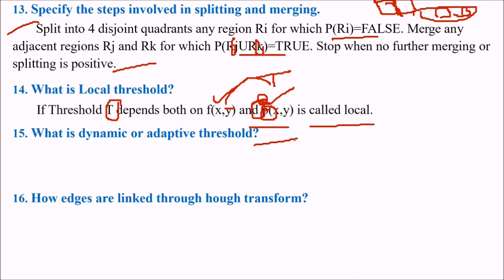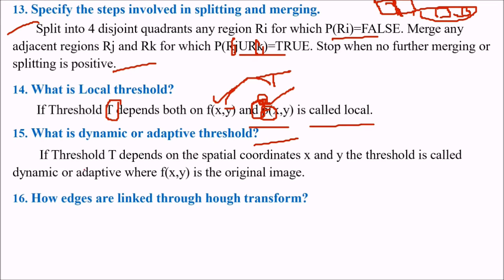What is the dynamic and adaptive threshold? If threshold T depends on the spatial coordinates (X,Y), the threshold is called as dynamic or adaptive, where F(X,Y) is the original image.